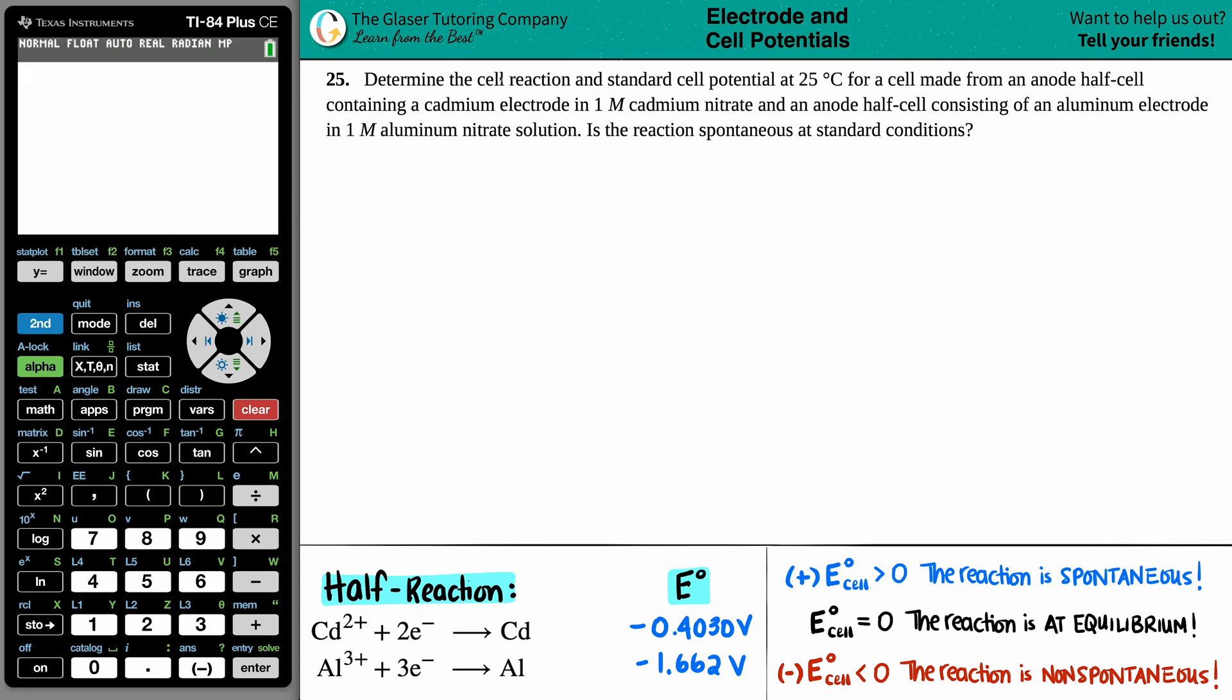Number 25. Determine the cell reaction and standard cell potential at 25 degrees Celsius for a cell made from an anode half cell containing a cadmium electrode in one molar cadmium nitrate and an anode half cell consisting of an aluminum electrode in one molar aluminum nitrate solution, and then is the reaction spontaneous at standard conditions?